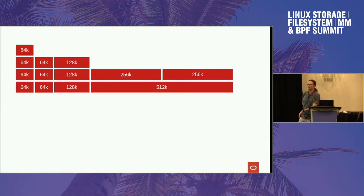Some of you are network file system people and you think you're special — you're not. This is a problem for both disk as well as network file systems. It's even a problem when you're on SSDs. Yes, they're really, really fast, but it's not instantaneous. It takes a little bit of time for the flash chips to give up their data.